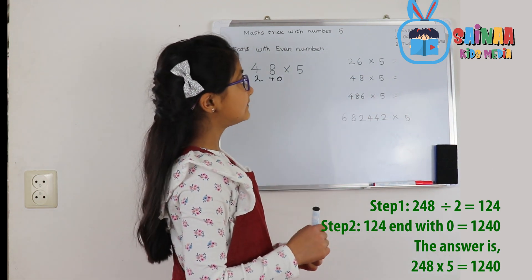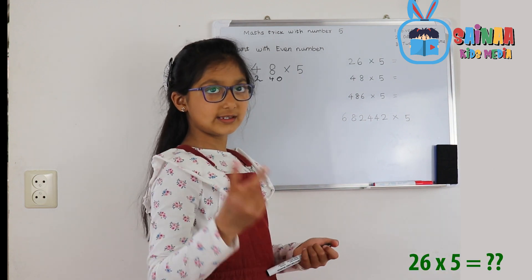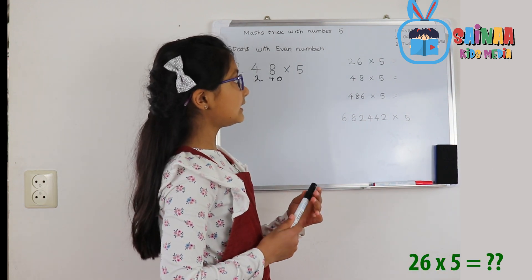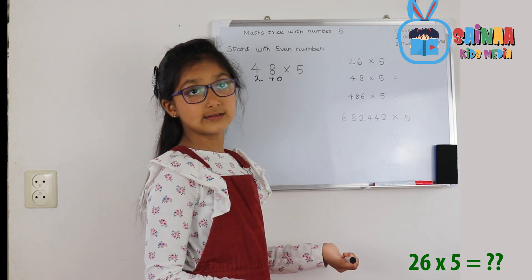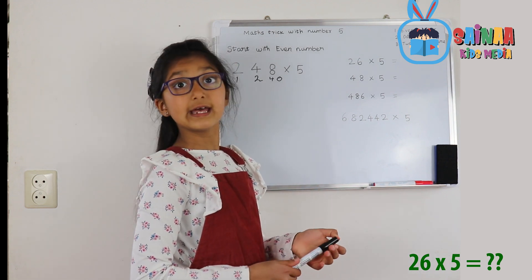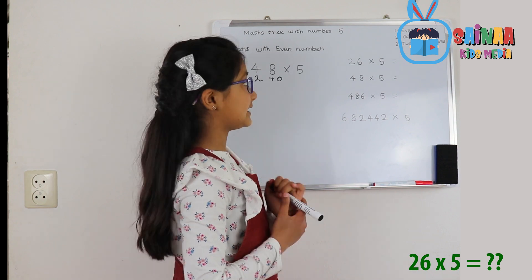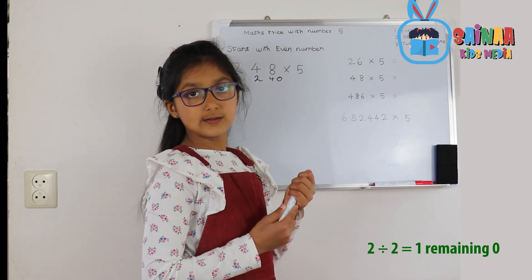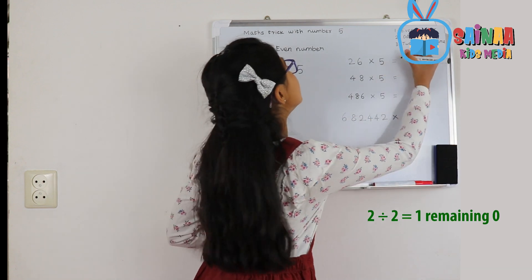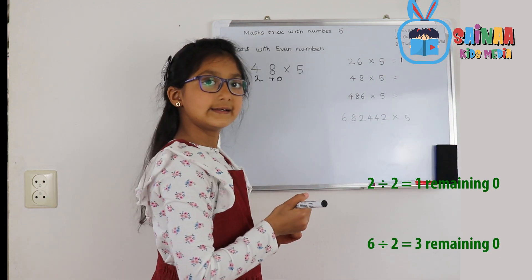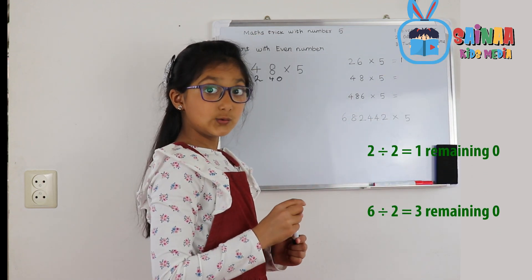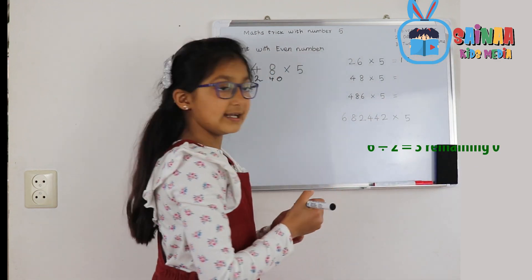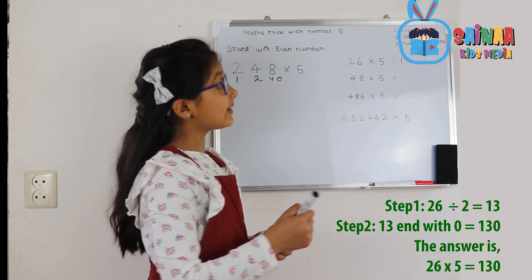Now let's try it with 2 digits to make it easier. 26 times 5 — oh no, that's hard again. Let's do the same trick: 2 divided by 2 is 1, 6 divided by 2 is 3, and at last, add a 0. That gives us 130.